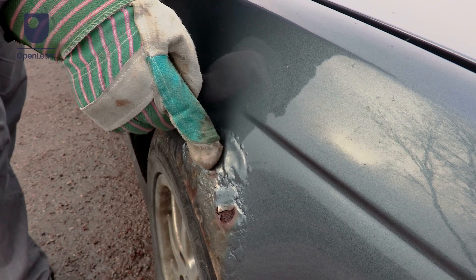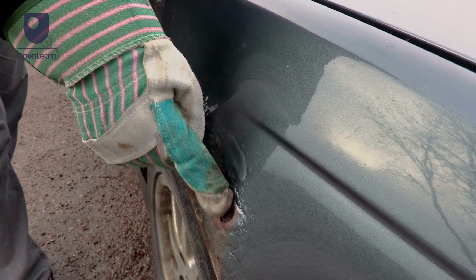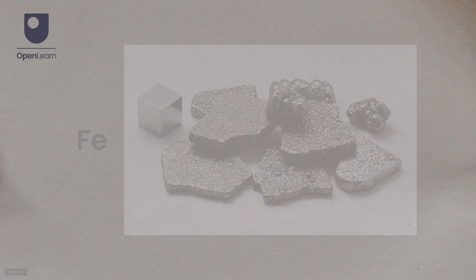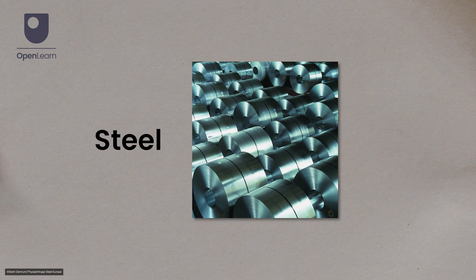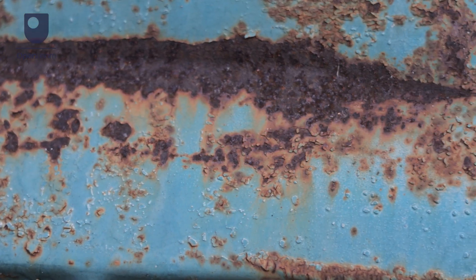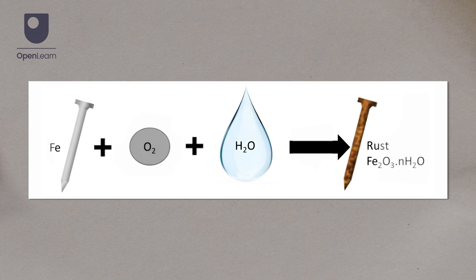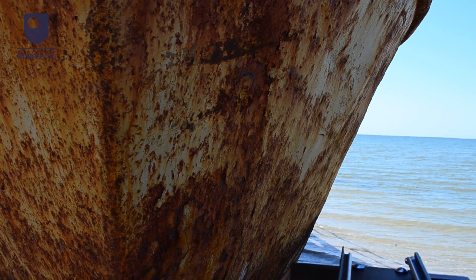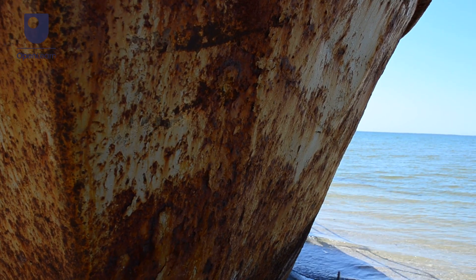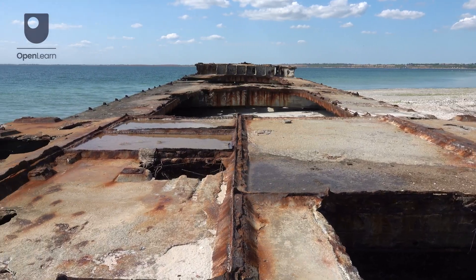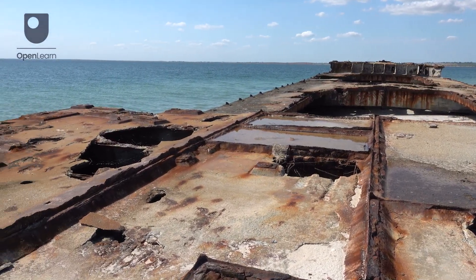Rusting is a special case of corrosion that only happens to iron and its alloys, such as steel. We use rust as a general term for any iron oxides formed by the reaction of iron with oxygen and water. Given enough time, any iron that is exposed to the environment will become rust completely and disintegrate.